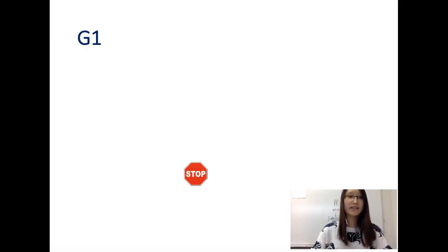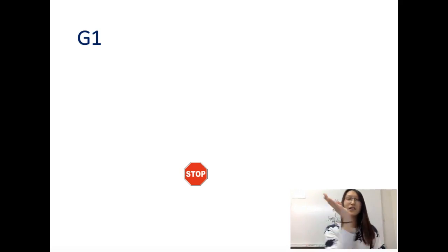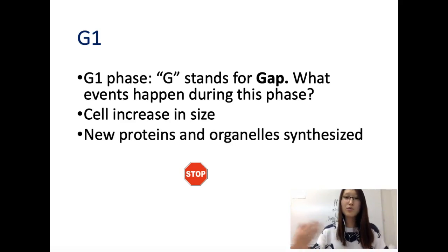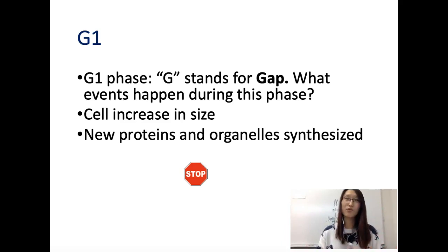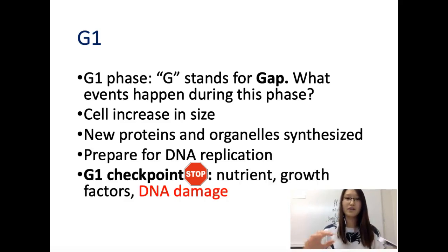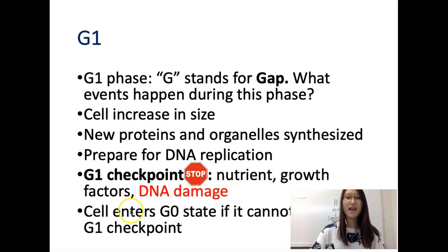Now let's look at each phase in detail. G1 phase — G stands for gap. The cell gets bigger, new proteins and organelles are synthesized. In order to divide, you need duplicates of everything: Golgi apparatus, lysosomes, ER — everything needs to be duplicated. We also prepare for DNA replication, check for DNA damage, sufficient nutrients, and growth factors. If the cell doesn't pass the G1 checkpoint, it goes into G0.